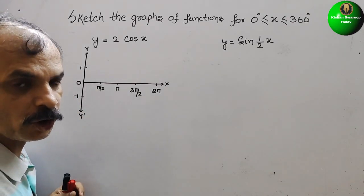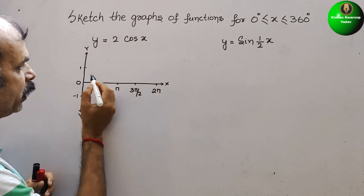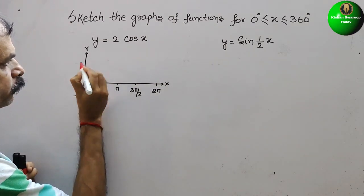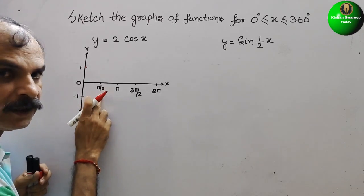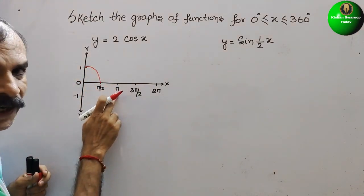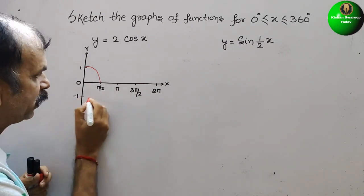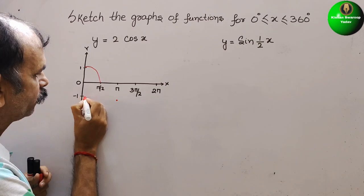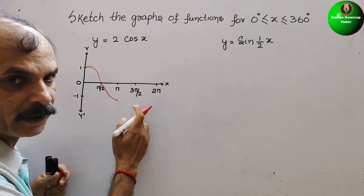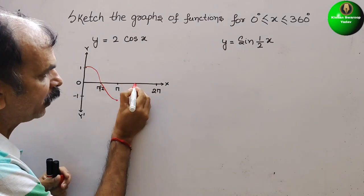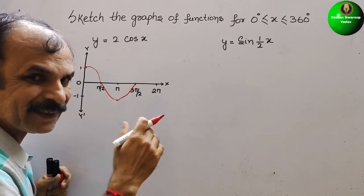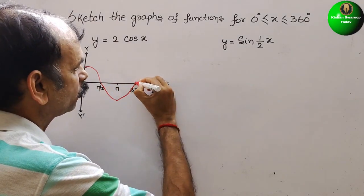Now cos 0 degrees is 1, so here we will start the wave. Next, cos 90 degrees is 0, so we join like this. Next, cos 180 degrees is minus 1, so here it will come down this way. Then cos 2 pi, that is 360 degrees, is 1 again, so it will go back up like this.